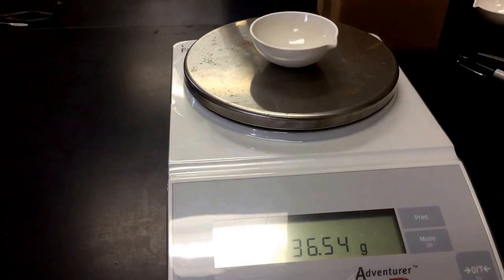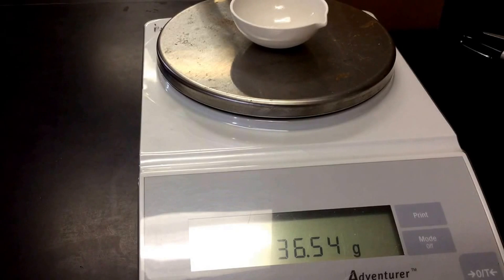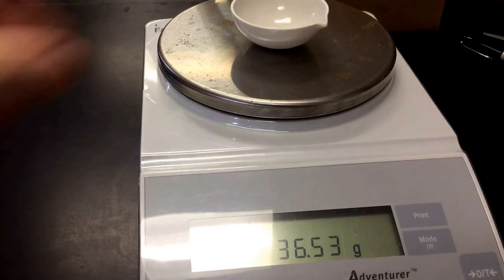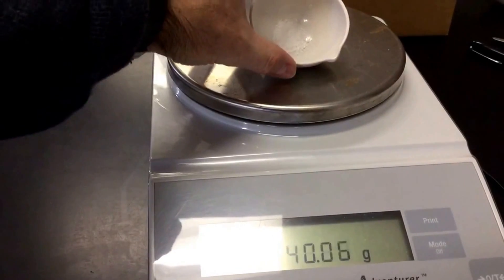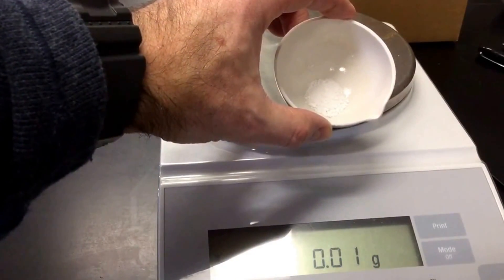I think that's good enough for us. So then in our data table, we would record 36.54 and write that down. And that's going to be what we need to do as far as weighing out our chemical. And you can see, it's not very much in our dish, but that's all we're going to need to do our lab.